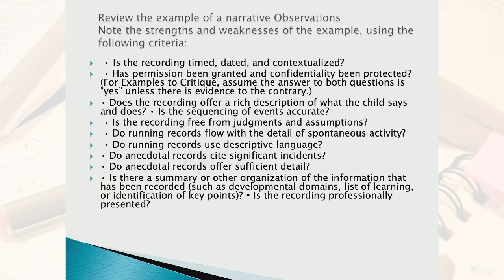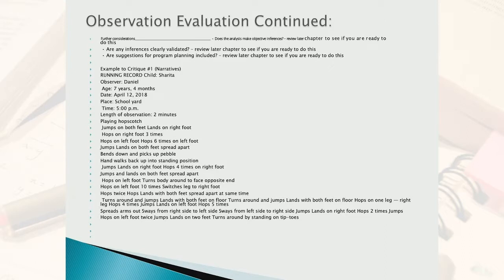You can use your observations to figure out a program plan to change behaviors. There are different tools you'll use — this is one example. The date and age of the child are really important because you want to make sure your developmentally appropriate practices coincide with that age. Consider how long you are observing and the different sequences of events.